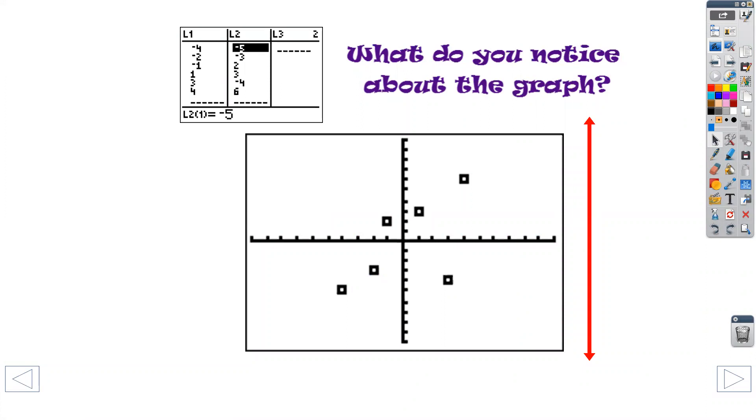Now, when the X coordinates, like we said, can never repeat. So we have something called a vertical line test. That means if I drew, just like the red line, a vertical line for each one of these points, my red line should never go through one of these points more than one time. So therefore, this is a function because my red line never touched more than one point at a time.